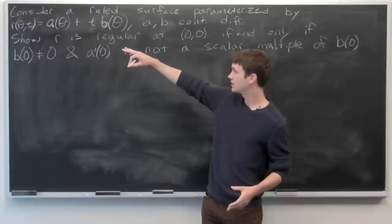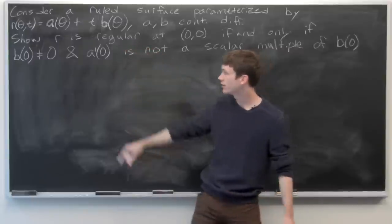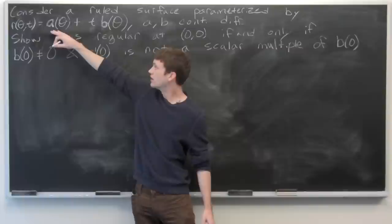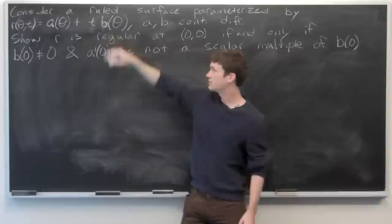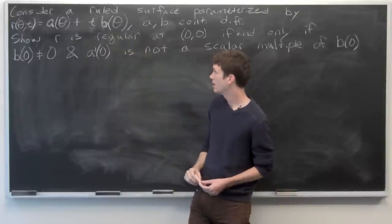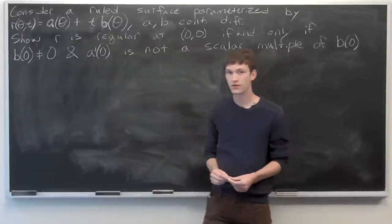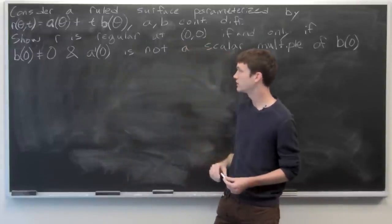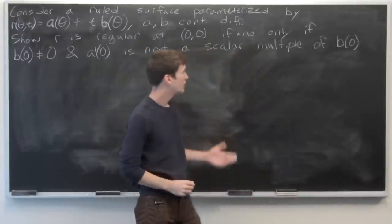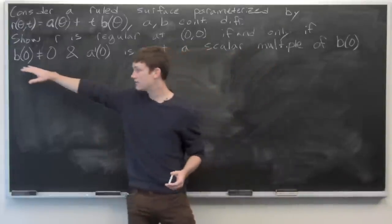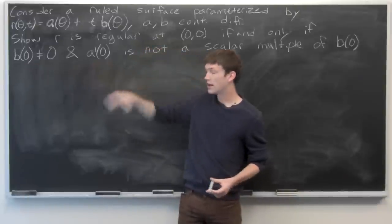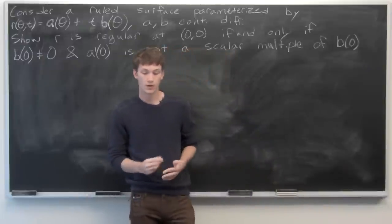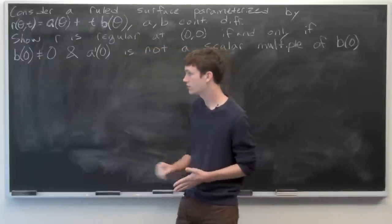In this problem we're asked to consider a ruled surface parameterized by r(θ, t) = a(θ) + t·b(θ), where a and b are continuously differentiable. We want to show that r is regular at the point (0,0) if and only if b(0) ≠ 0 and a′(0) is not a scalar multiple of b(0).